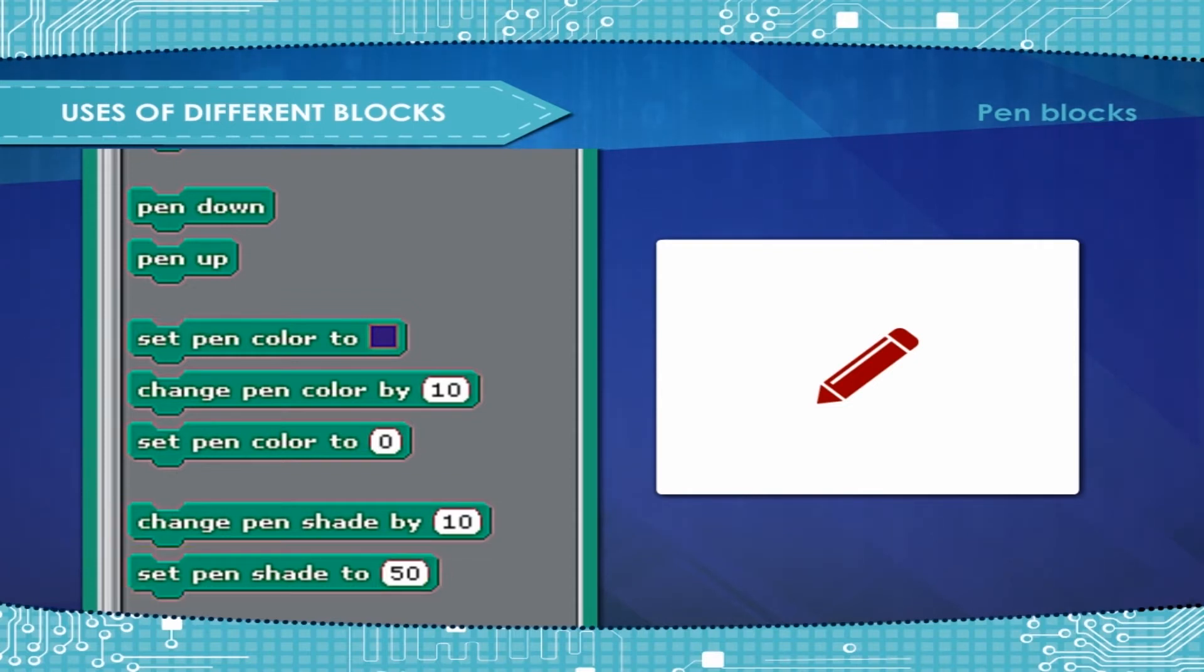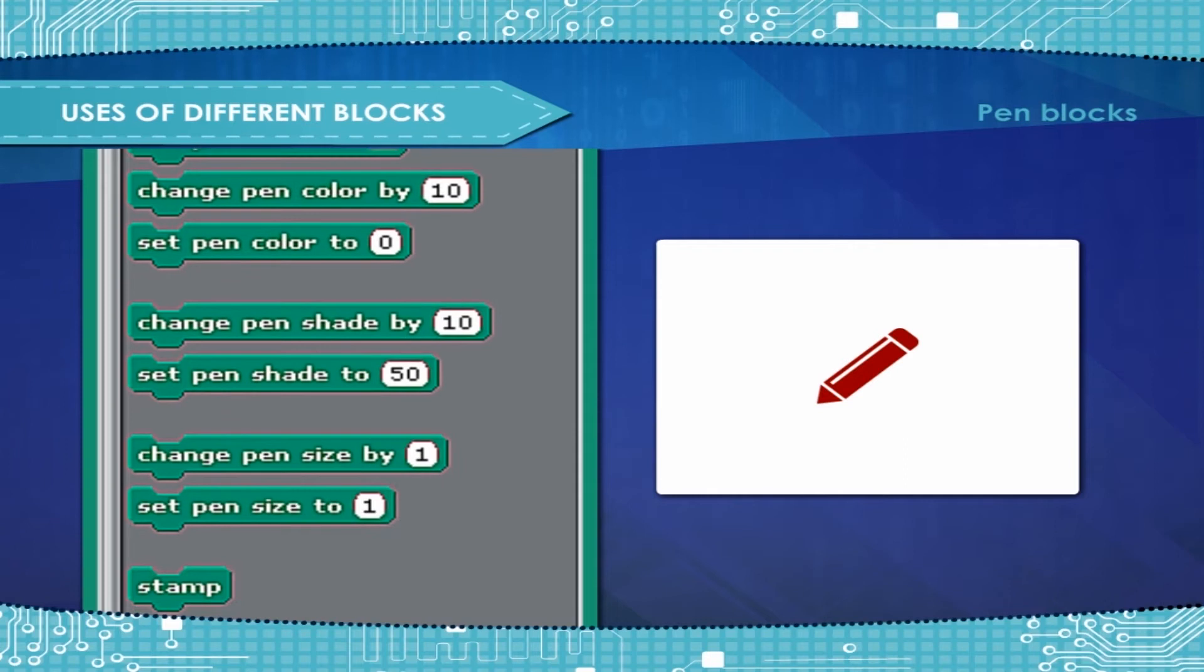Set pen shade to sets the pen shade to the amount. Change pen size by changes the pen size by the amount. Set pen size to sets the pen size to the amount.